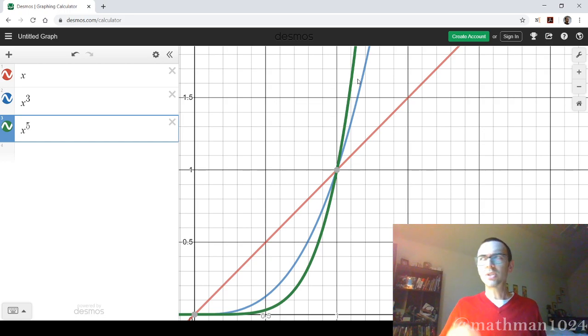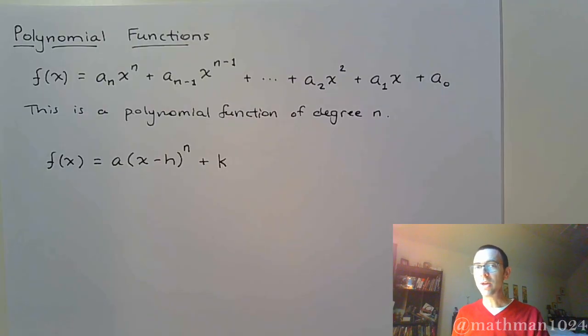But beyond that, it just blows up, which kind of makes sense. We would expect x to the fifth to be much bigger than x to the first as you go out to the right. So those are some of the basic shapes that we see with that.